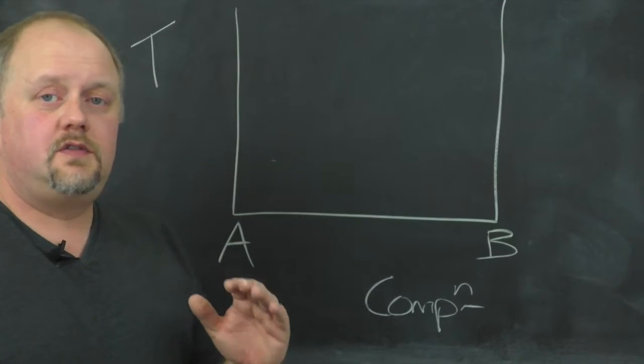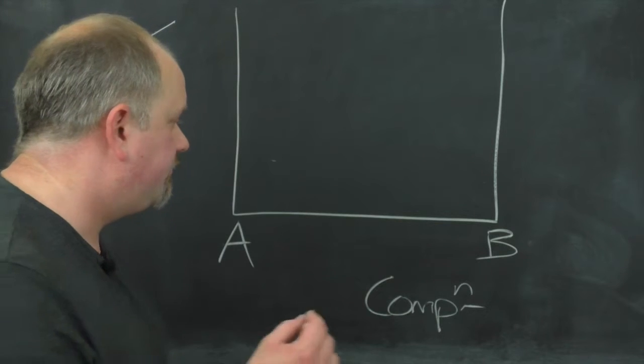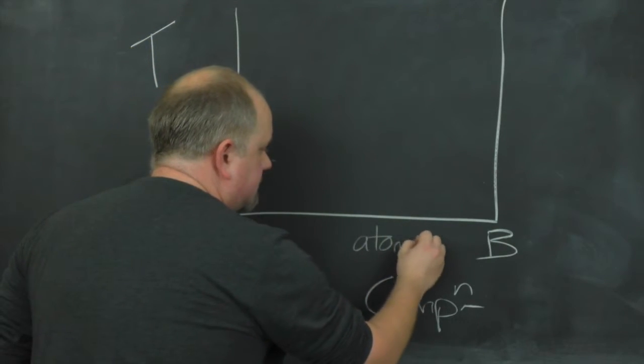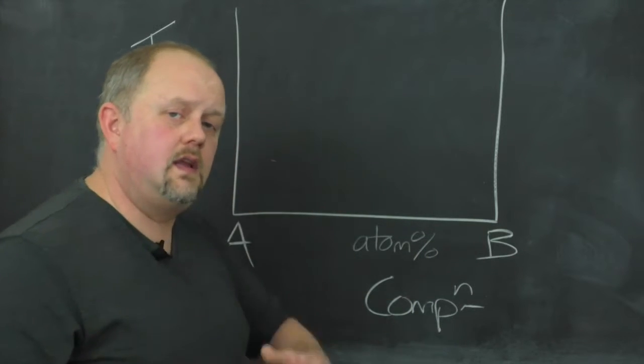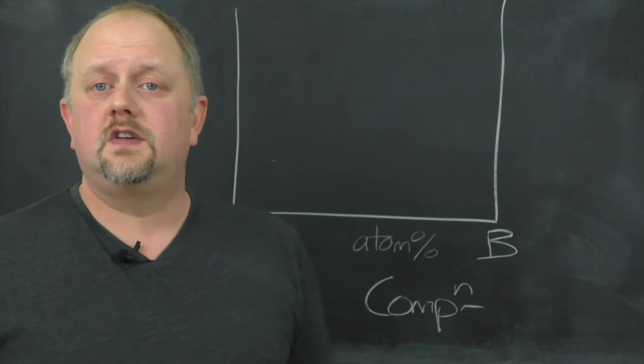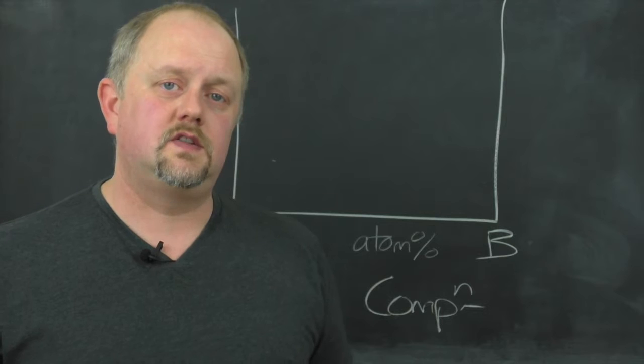There are three ways we can define our composition axis. Firstly, some people use atom percent. This is a really nice simple system and it makes a lot of sense for simple systems, particularly metallic systems where you maybe just have a mixture of two different atoms.